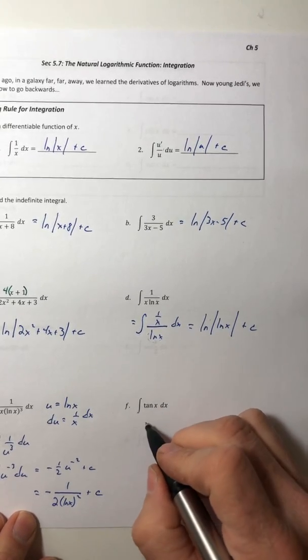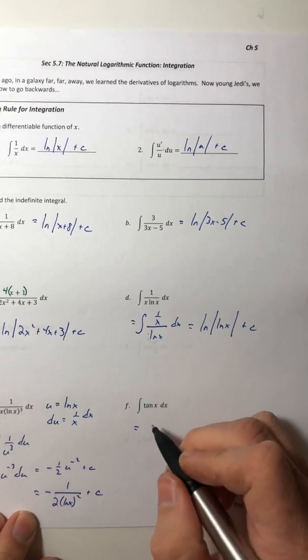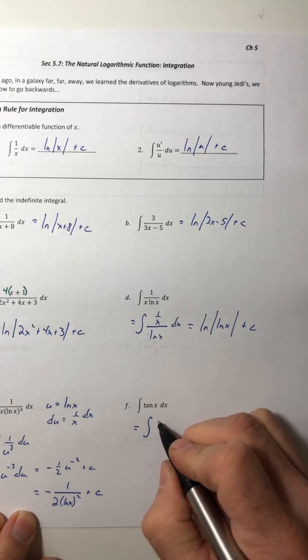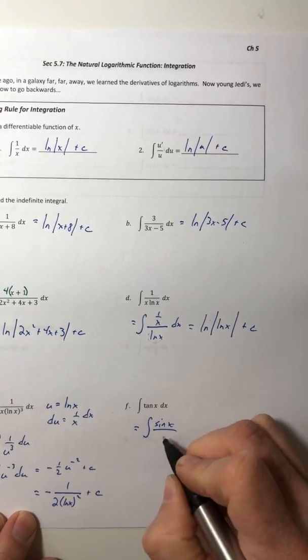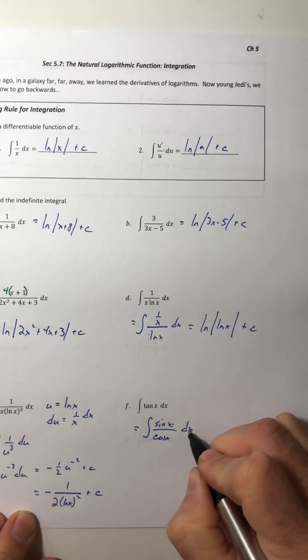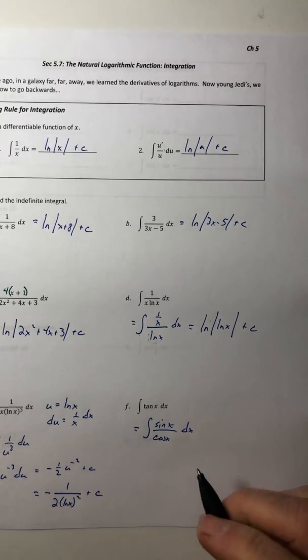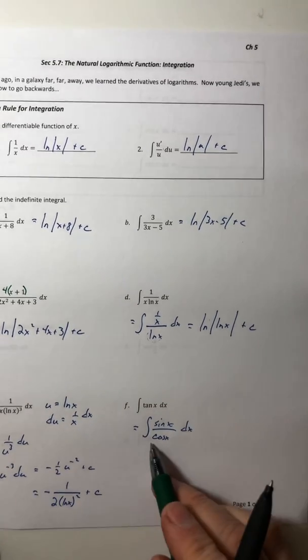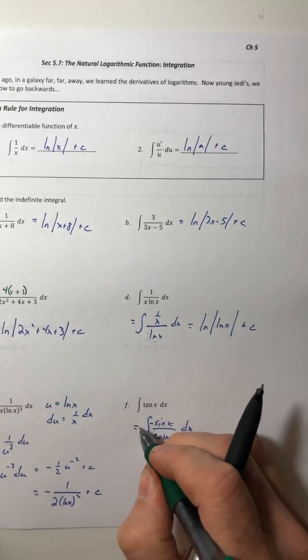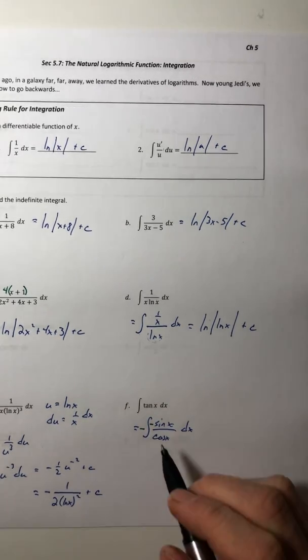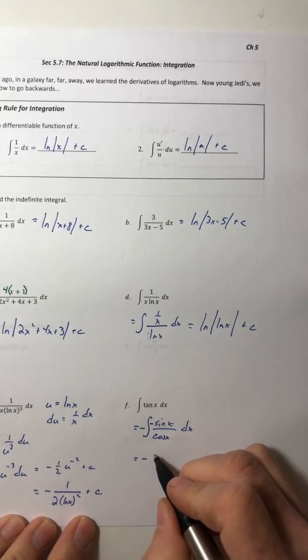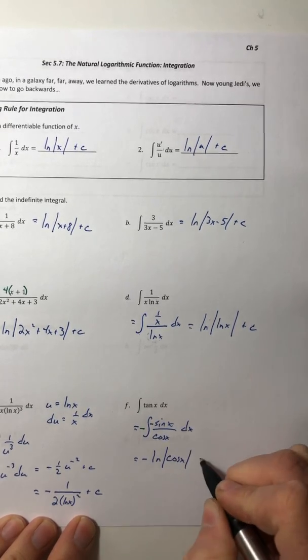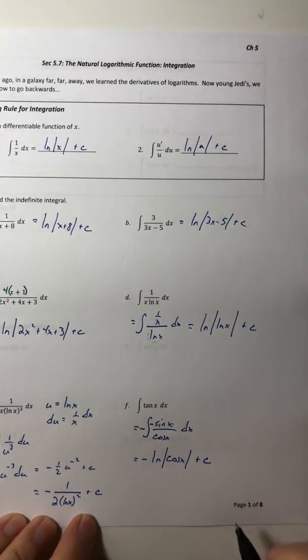All right, so example f. We don't have a rule for tangent yet. And that's because we need to rewrite tangent as sine over cosine. And look at it in this format. Because now we've got this technique to integrate. So the derivative of cosine is negative sine. So I need a negative inside and out. So I have negative ln absolute value cosine of x plus c.